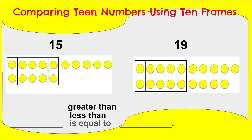So is 15 greater than 19? Is 15 less than 19? Or is 15 equal to 19? You might have said 15 is less than 19 because it is a smaller amount. We can see that they both have one 10 frame that's all filled, but the number 15 has five more and the number 19 has nine more. We know that five is less than nine. So you say: 15 is less than 19. Great job practicing those special vocabulary words.